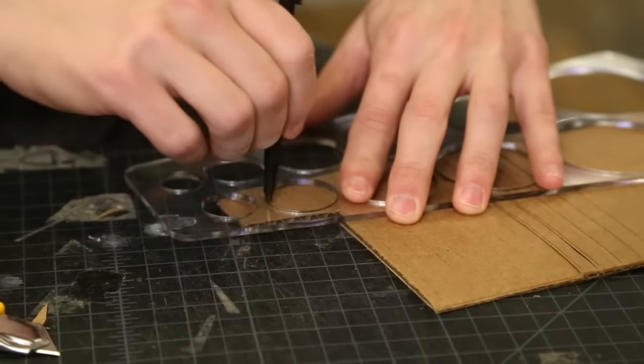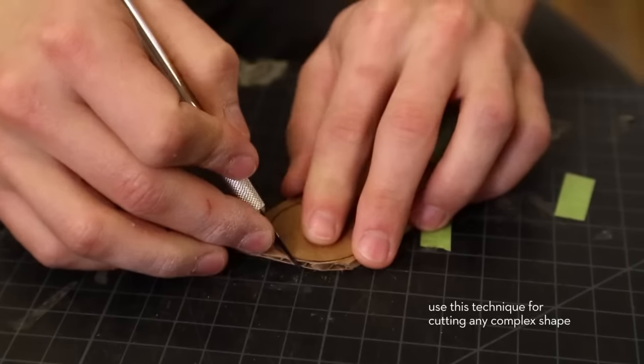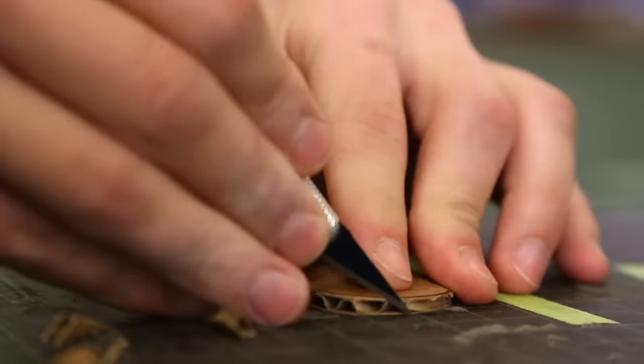It's actually really challenging to cut a curved line into a piece of cardboard. Instead of trying to take it all at once you make several small cuts to round out the edge.